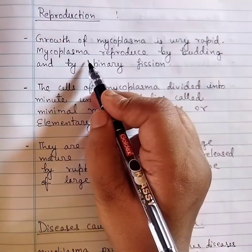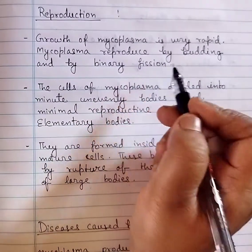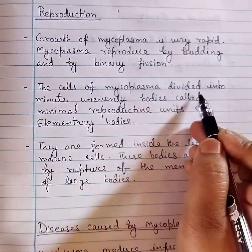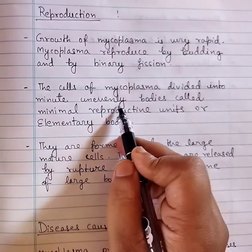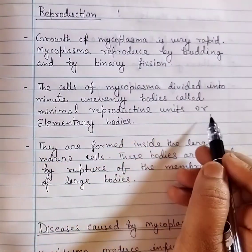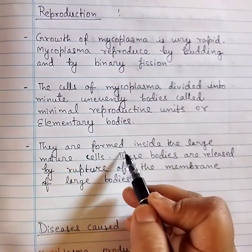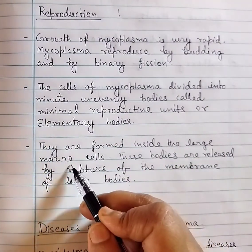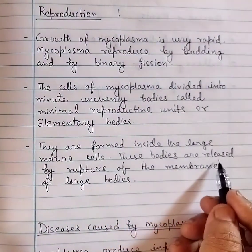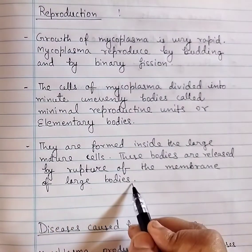Reproduction: growth of mycoplasma is very rapid. Mycoplasma reproduce by budding and by binary fission. The cells divide into minute, unevenly-sized bodies called minimal reproductive units or elementary bodies. They are formed inside the large mature cells and are released by rupture of the membrane of the large bodies.